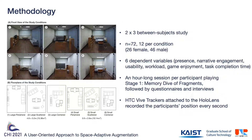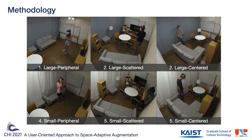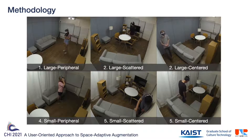In a between-subject study, 72 participants played the first stage of Fragments in one of the six conditions. Presence, narrative engagement, usability, workload, and game enjoyment were measured with post-study questionnaires. Task completion time and the participants' positions during the game were also recorded. The compilation of videos from each study condition shown here will give you a clear picture of how our study was conducted.